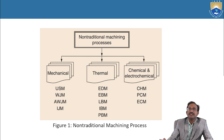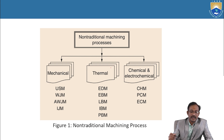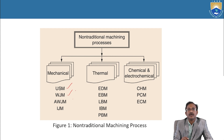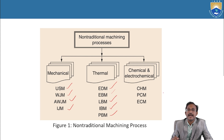Non-traditional machining processes are categorized into mechanical, thermal, chemical, and electrochemical. In mechanical, we have ultrasonic machining, water jet machining, abrasive water jet machining, and ice jet machining. In thermal: electro discharge machining, electron beam machining, laser beam machining, ion beam machining, and plasma beam machining. In chemical and electrochemical: chemical milling, orthochemical milling, and electrochemical milling.